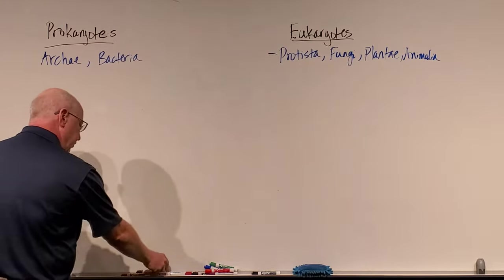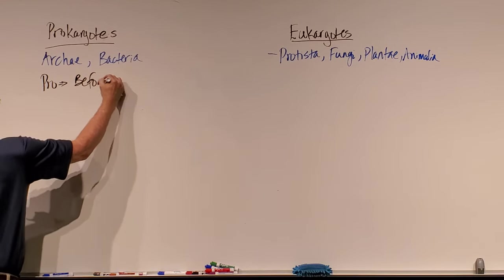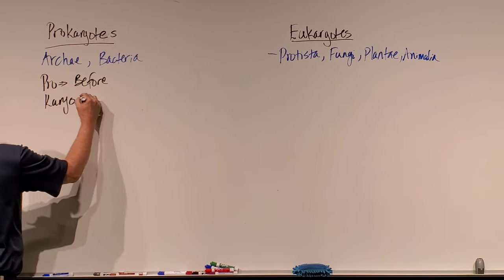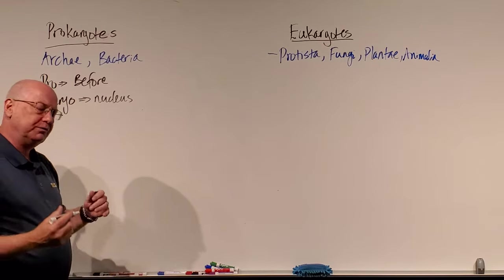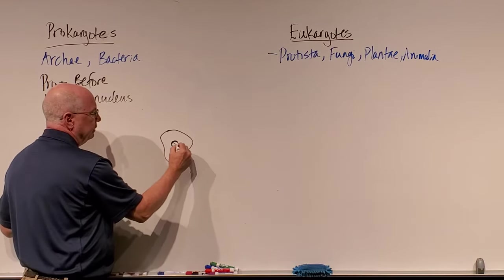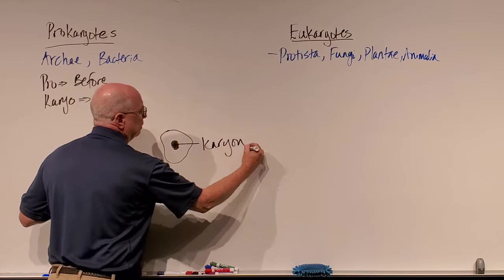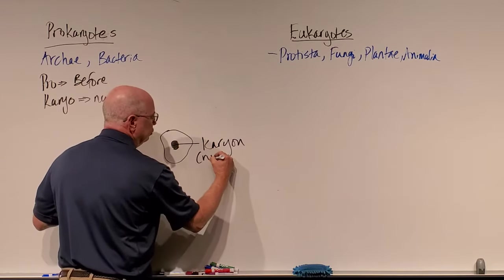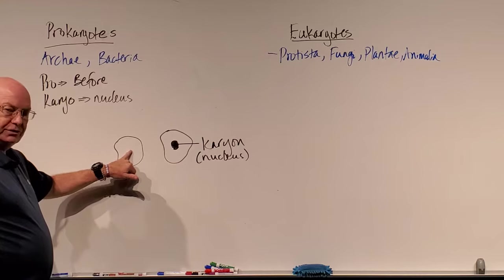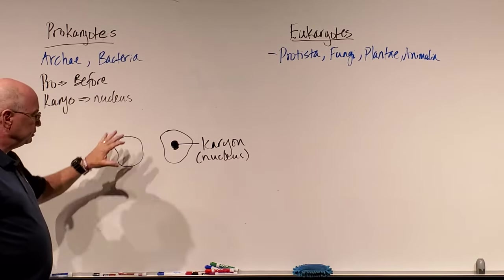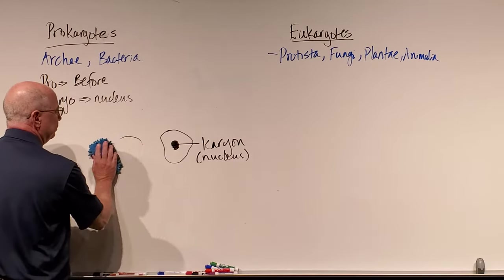What does the term prokaryote and eukaryote mean? If we break the words down, 'pro' can mean before, and 'karyote' comes from the term karyon, which means nucleus. When scientists first started looking at cells under microscopes, they noticed that some cells had a little seed or kernel inside — originally called the karyon, which in Latin means kernel. We now know that's the nucleus. Other cells did not seem to have a karyon, so they classified these cells as being prokaryotes — before they had a nucleus. It's believed these cells evolved first, and then eukaryotes evolved after prokaryotes.